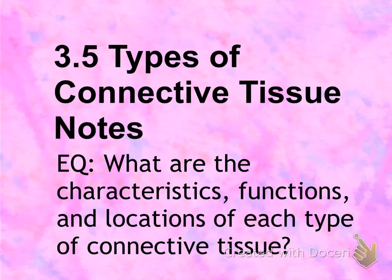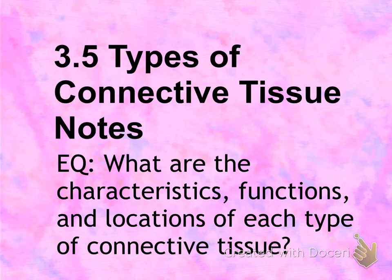This is 3.5 types of connective tissue notes. The essential question is: what are the characteristics, functions, and locations of each type of connective tissue?